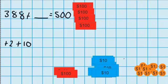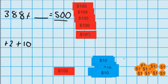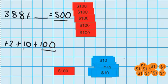Now I can see I've got 1, 2, 3, 4 $100 notes. The question says I need $500, so that means I need to add one more $100 note. I'll add that up to my pile — now I've got the right amount of money. I added $100, I added $10, and I added $2. So in total, I added $112.